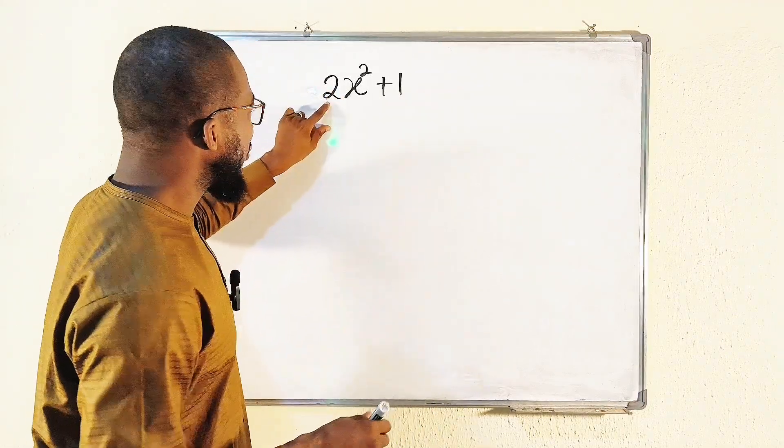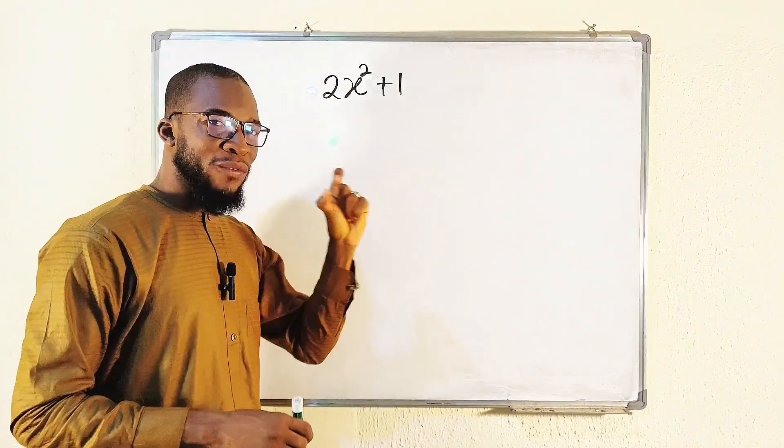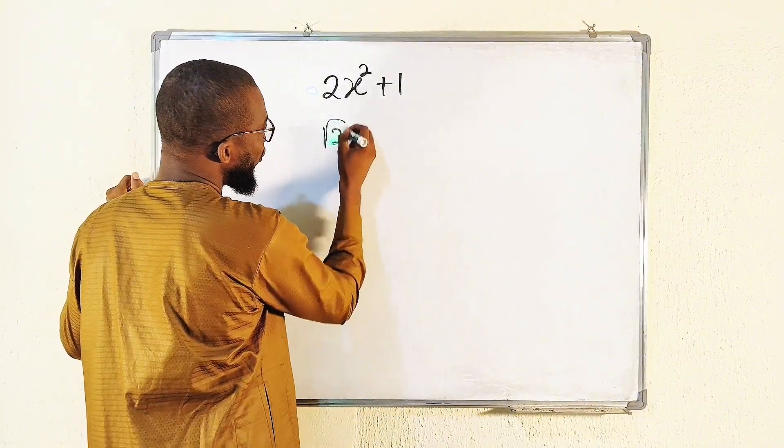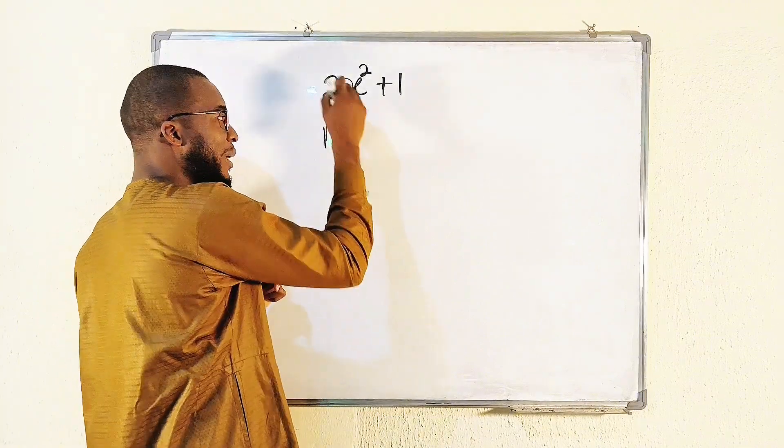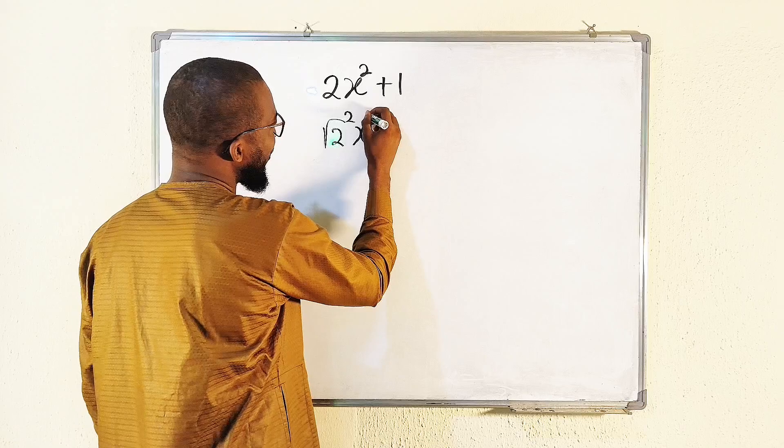Number one, I would like to transform two into square root of two squared. So this is square root of two, also squared, it will give us two back. And we still have x squared.